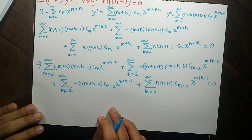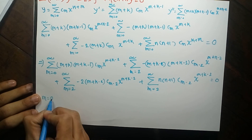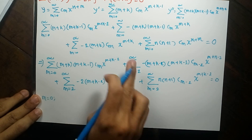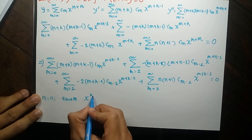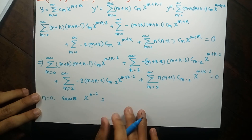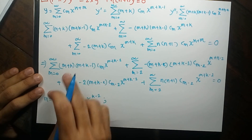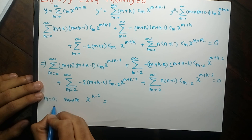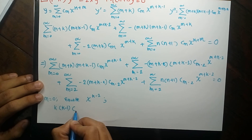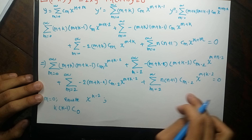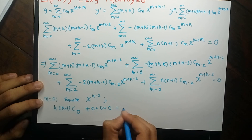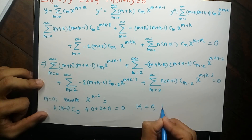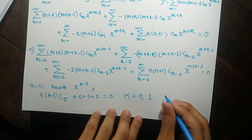Our next step is to put m equals 0 and equate the coefficients of the lowest power of x, which is x^(k−2). Putting m equals 0 in the first term gives k(k−1) c_0. The remaining three terms cannot have m equals 0 since their indexing starts from m equals 2, so they contribute 0. Since c_0 cannot be 0, this implies k equals either 0 or 1. The difference between the roots is an integer.